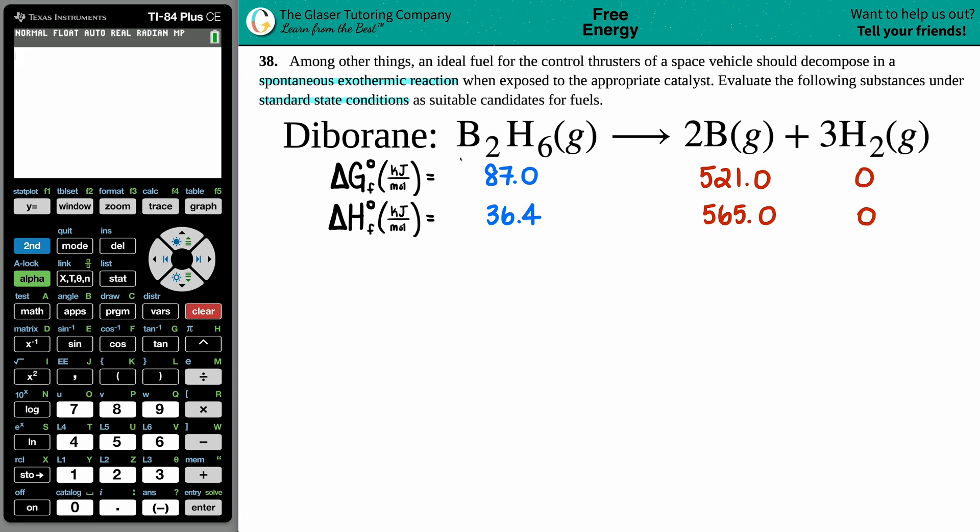Okay, so in this question is diborane a good candidate for fuel for these control thrusters of a space vehicle? Well, they gave us the criteria right—it needs to decompose into a spontaneous exothermic reaction. So here's diborane B₂H₆ gas, it will break down into 2B gas plus 3H₂ gas.